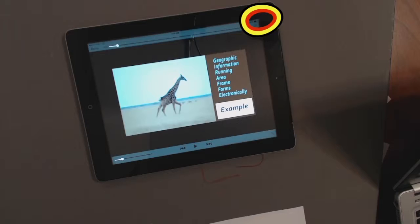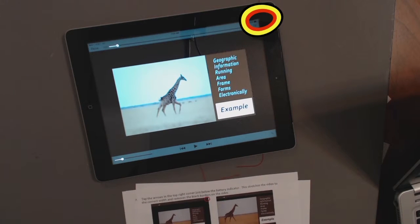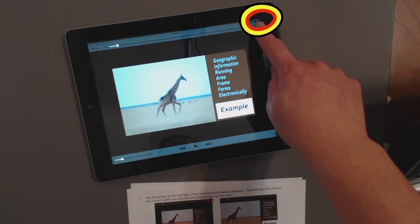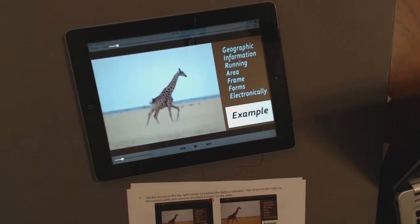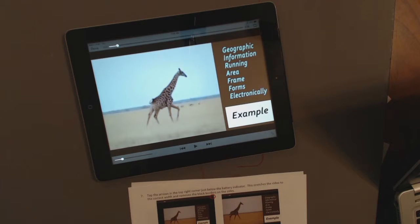Tap these arrows in the top right corner just below the battery indicator. This stretches the video to the correct width and removes the black borders on the sides. This slider bar will be used to adjust the volume.